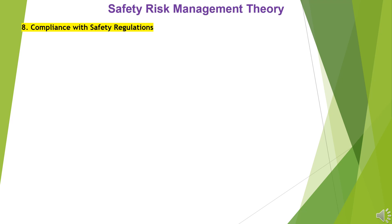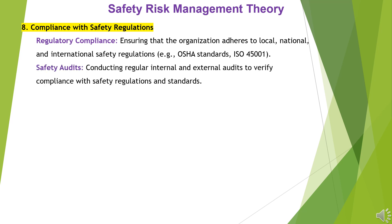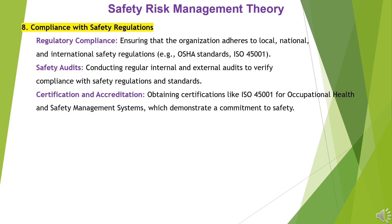8. Compliance with Safety Regulations. Regulatory Compliance: ensuring that the organization adheres to local, national, and international safety regulations, e.g., OSHA standards and ISO 45001. Safety Audits: conducting regular internal and external audits to verify compliance with safety regulations and standards. Certification and Accreditation: obtaining certifications like ISO 45001 for occupational health and safety management systems, which demonstrate a commitment to safety.